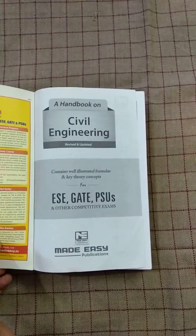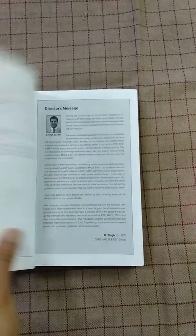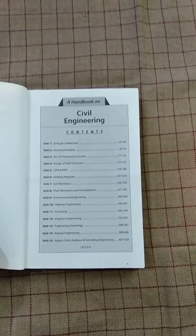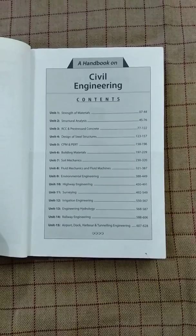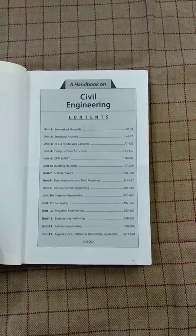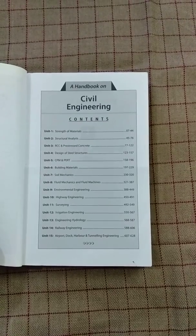This book contains formulas and key theory concepts. Starting with the contents, there are total 15 units. First is strength of materials, second one structure analysis, RCC and prestressed concrete.